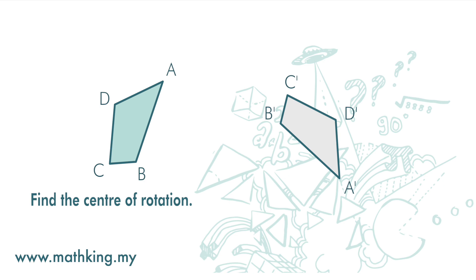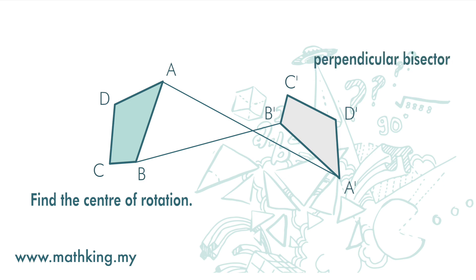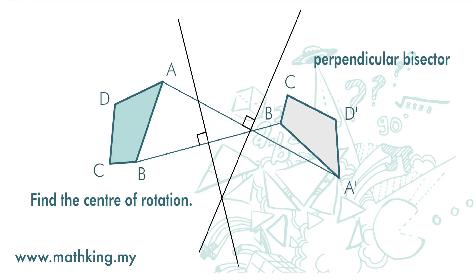Here we have the object and the image, and we want to find the center of rotation. Here is how we find it: first, we draw two pairs of corresponding points on the object and image — A and A', and then B and B'. Then we construct a perpendicular bisector for line segment AA', and then another perpendicular bisector for line segment BB'. Where the two lines intersect is the center of rotation.